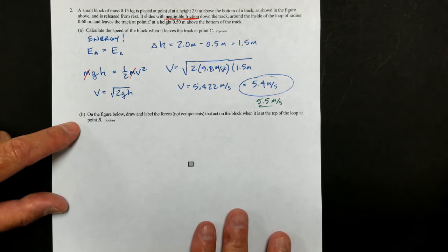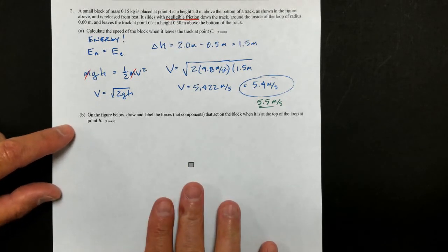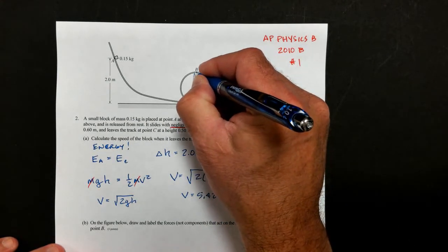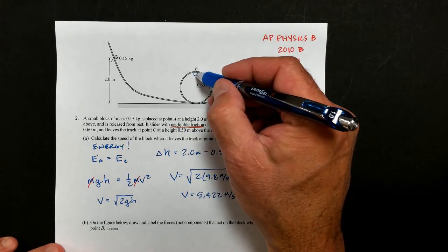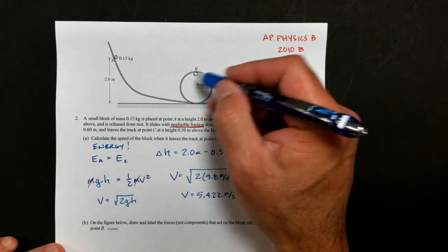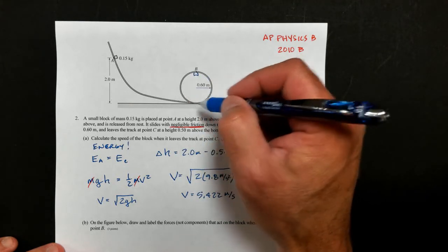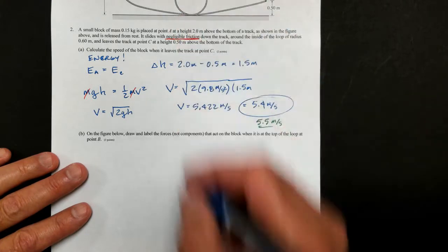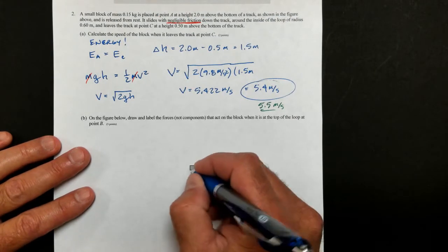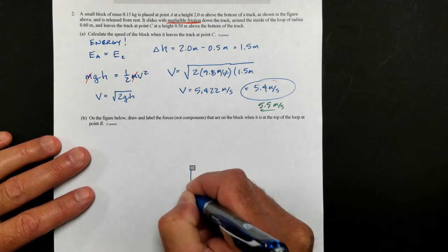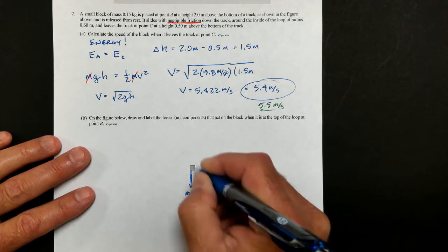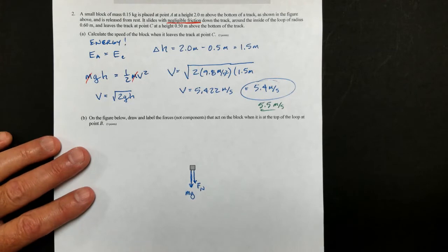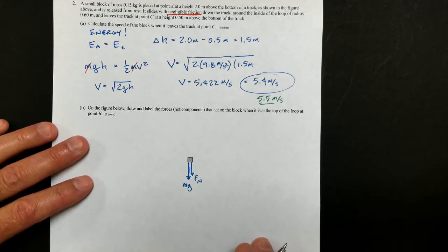On the figure below, draw and label the forces, not components, that act on the block when it is at the top of the loop at point B. Now, if we look at point B, the block is going to be, I'll just go ahead and draw it in. And we know that at point B, it's going to be touching the track, and we've got some forces causing that to move in a circular path. Now, we know it's going in a circular motion, so it has to have a net force, and that net force is going to be the centripetal force. But the forces that are on that block at that point are going to be, well, obviously we're on Earth, so we're going to have the weight force, Mg. And we're going to have the normal force, Fn. So that should be just the only two forces that are involved.